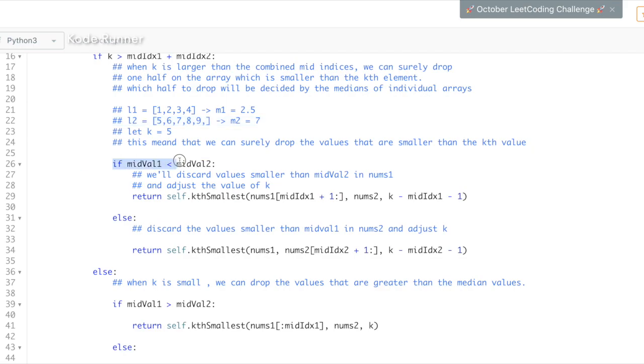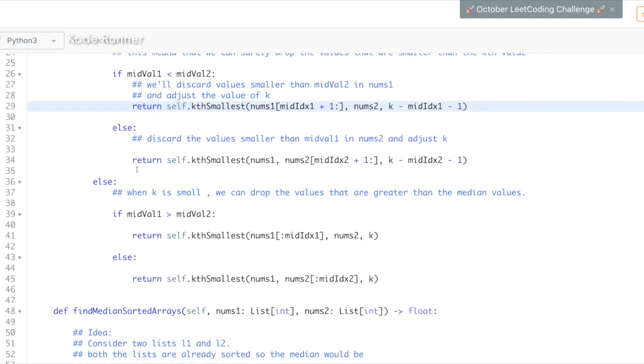If the median of list 2 was more than the median of list 1, we drop the first half of list 1 and adjust the index that we have to look for now. We do the opposite if the median of list 1 was more than the median of list 2.